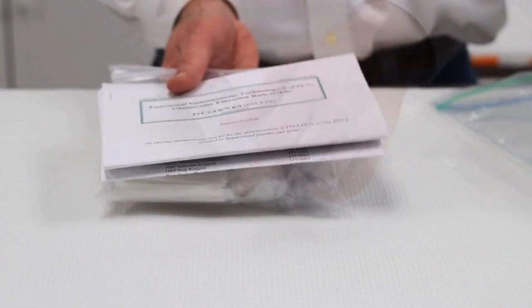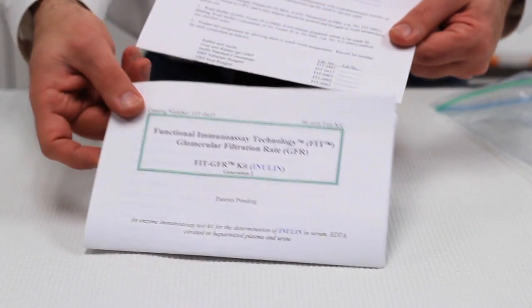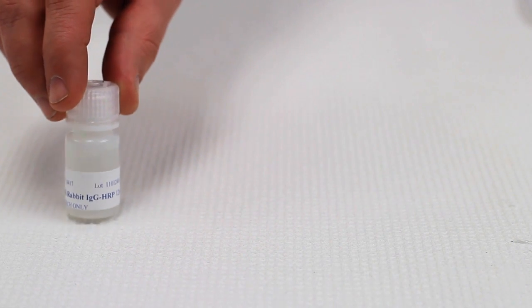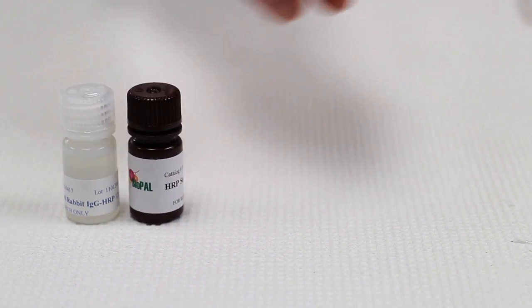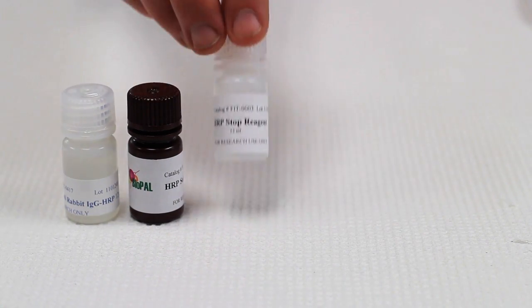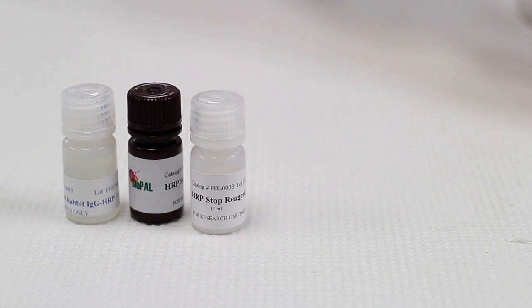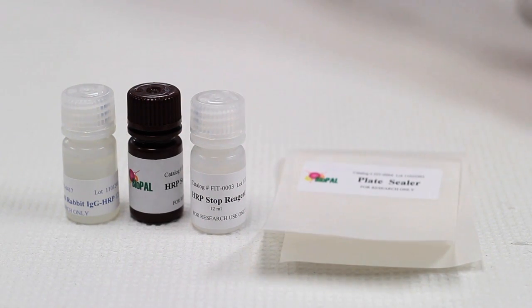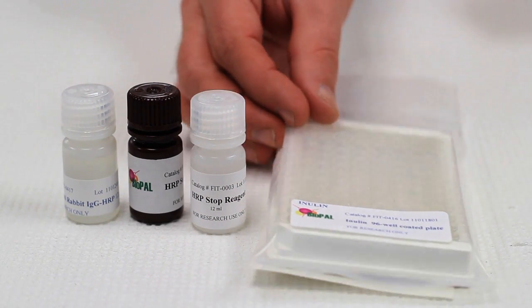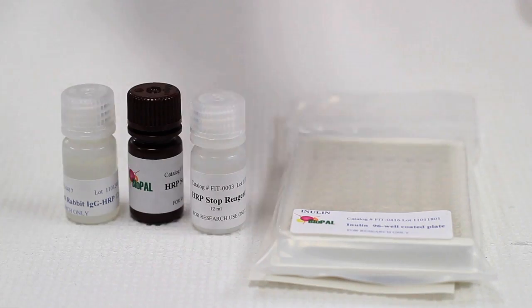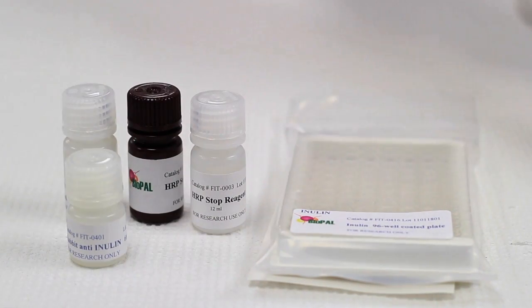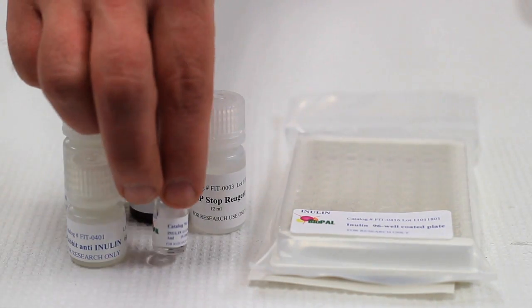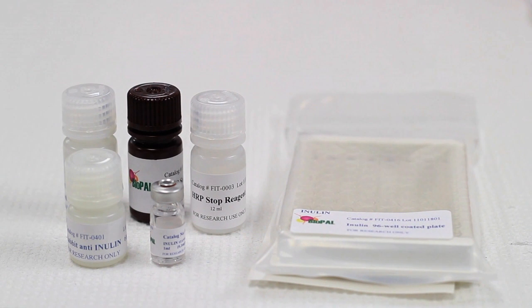Each kit contains eight components: one kit manual, one bottle of goat anti-rabbit IgG-HRP, one bottle of HRP substrate reagent, one bottle of HRP stop reagent, two plate sealers, one 96-well probe coated plate, one bottle of rabbit anti-probe, and one bottle of probe standard concentrate, which will be either inulin or iohexol.